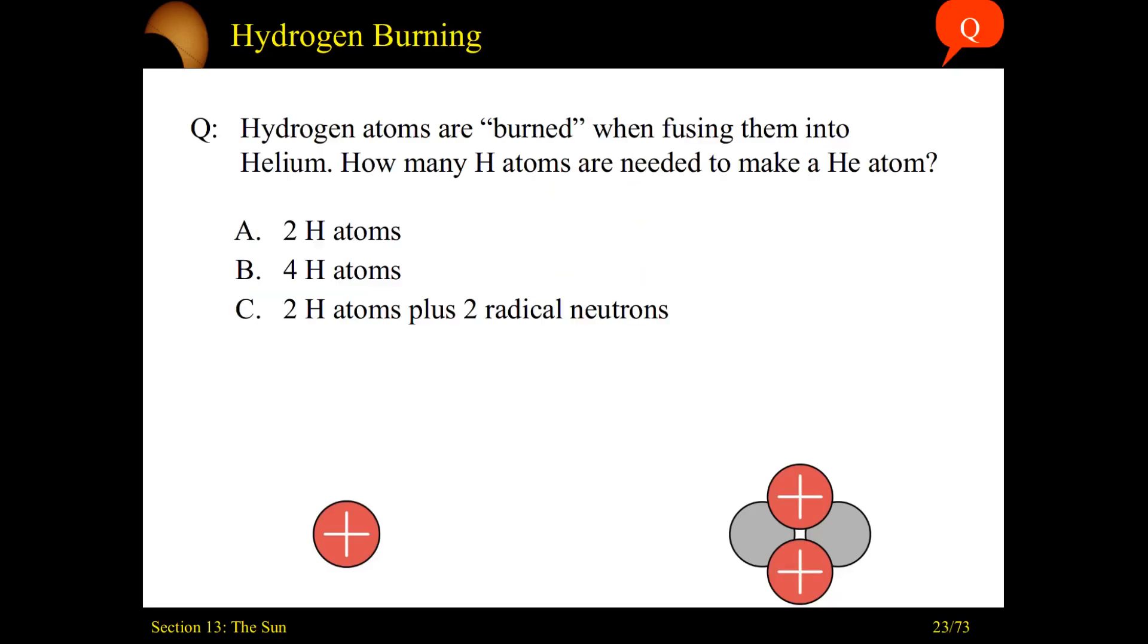So if we are burning hydrogen into helium, very straightforward question. How many hydrogen atoms does it take to make one helium atom? Go ahead and pause, think about it. So it's going to take straight up four hydrogen atoms. We need four hydrogen atoms to make one helium atom.